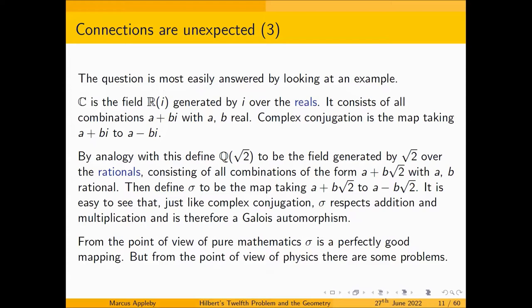C is the complex numbers, the field generated over the real numbers by adding in the number i, consisting of all combinations a + bi with a and b real. Complex conjugation takes a + bi to a − bi, as we all know. You can play exactly the same game with the field generated over the rationals by adding √2. It consists of all combinations a + b√2 where a and b are rational numbers, and you can define σ to be a map taking a + b√2 to a − b√2. That again is bijective, respects addition and multiplication, and is therefore a Galois automorphism.